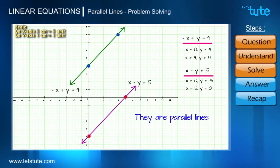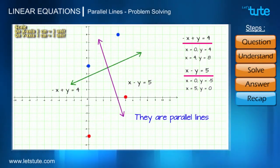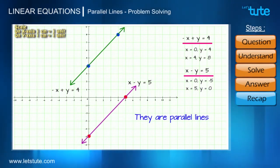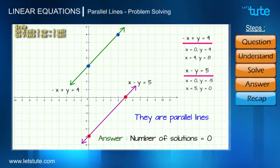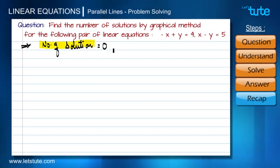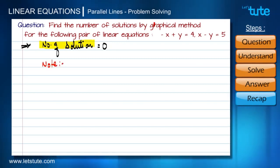Step four: finding the number of solutions. If you see these two lines, they are not intersecting with each other. There are no common points, and when there are no common points, there is no solution for this pair of linear equations. So the number of solutions for these two linear equations is equal to 0.